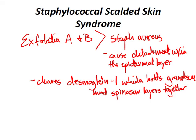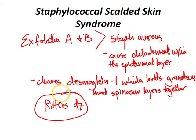It presents with fever, generalized erythematous rash, and thin-walled fluid-filled blisters that easily rupture. Ritter's disease of the newborn is the most severe form of staphylococcal scalded skin syndrome with similar signs and symptoms.